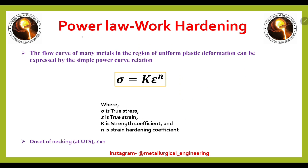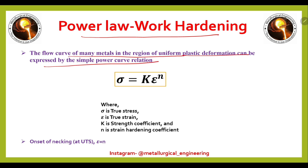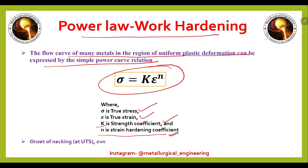Now we will see power law work hardening. The flow curve of many metals in the region of uniform plastic deformation can be expressed by a simple power curve relation: σ = kεⁿ, where σ is the true stress, ε is the true strain, k is the strength coefficient, and n is the strain hardening exponent. We will see in which region of the true stress-strain diagram this relation is valid.